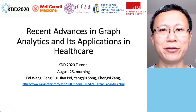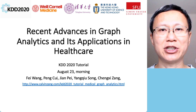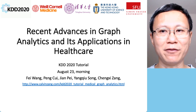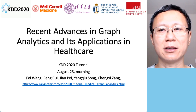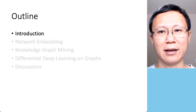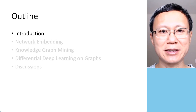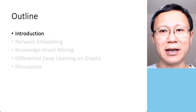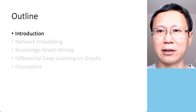This tutorial will be given by five of us. Professor Fei Wang is from Cornell University. Professor Peng Cui is from Tsinghua University. Zhang Pei is from Simon Fraser University. Professor Yangqiu Song is from the Hong Kong University of Science and Technology. And Dr. Chengxi Zhang is also from Cornell University. In this tutorial, we'll cover five different sections. I'm talking about the introduction section and the rest four sections will be taught by our other presenters.